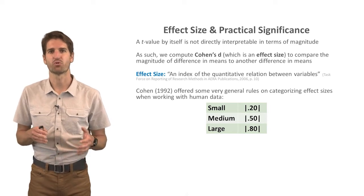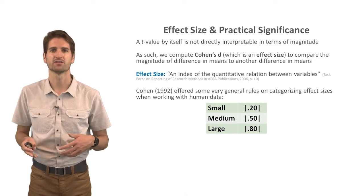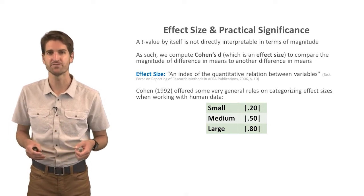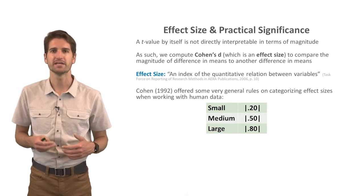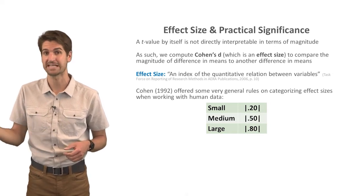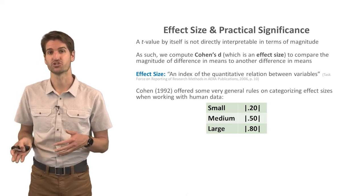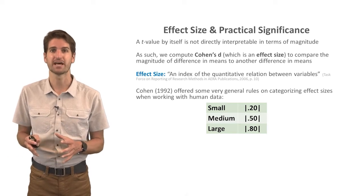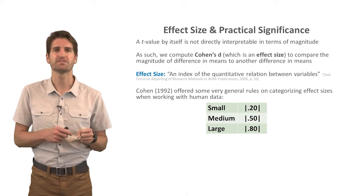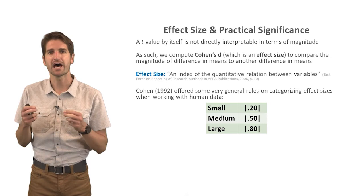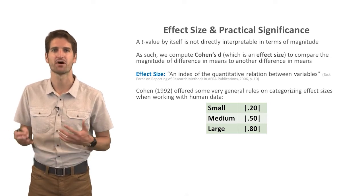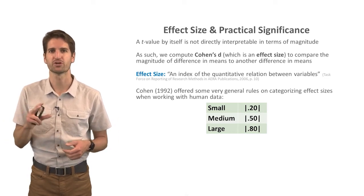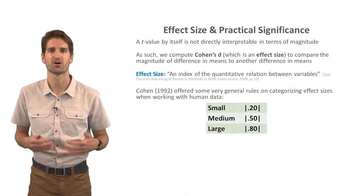Cohen's d looks at the difference between means in standard deviation units. Cohen offered general rules of thumb for describing effect size qualitatively: a small effect is around 0.2, a medium effect is around 0.5, and a large effect is around 0.8. However, these are not hard-set rules — you should consider the context and what's meaningful in your organization. For example, in a safety training context where the outcome is injuries or deaths, a Cohen's d of 0.2 might be considered large if it prevents even one person from getting seriously hurt.